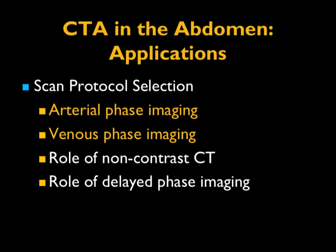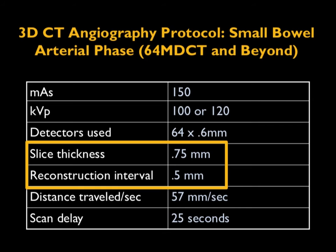When we do non-contrast scans, it's typically for stone protocol — non-contrast only — or for cases with hematuria where we're looking at the kidneys for high-density renal cysts. We rarely do delayed phase imaging. We use thin sections, 0.75 millimeters every 0.5 millimeters. We also reconstruct at 3-millimeter intervals for routine quick screening. The other images are used for multi-planar reconstructions as well as 3D mapping.